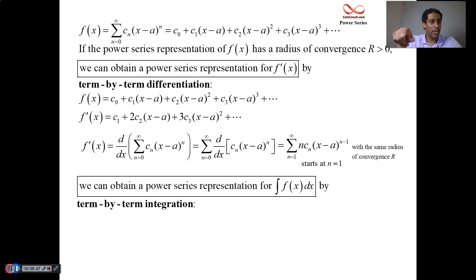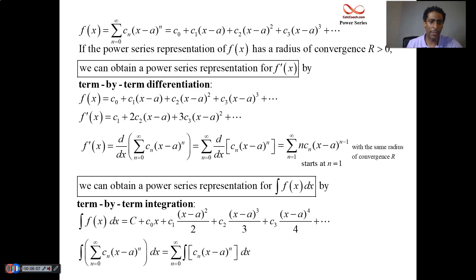The original function up top and its power series representation. We integrate the left and we integrate the right. C sub 0 times x, C sub 1 times the quantity of x minus a squared over 2, C sub 2 times the quantity of x minus a cubed over 3, and so on. The integral of the sum is the sum of the integrals. And so we can bring the sum outside and put the integral inside and take the anti-derivative of x minus a to be x minus a to the n plus 1 divided by n plus 1.